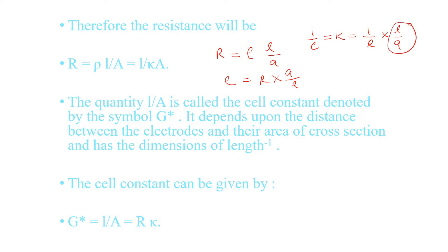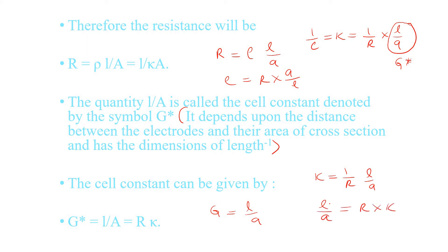The term L/A is called the cell constant, denoted G*. It is constant because the distance between the two electrodes and the area of cross-section remain fixed — only the electrolyte changes. So G* = L/A, and we can write K = G*/R, or equivalently G* = R × K.